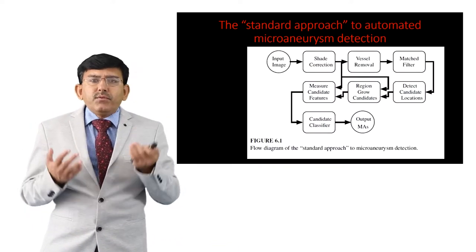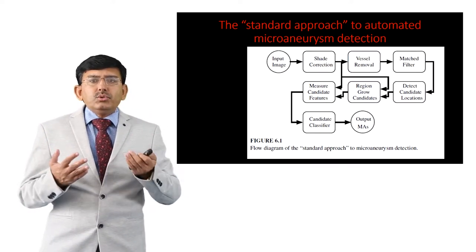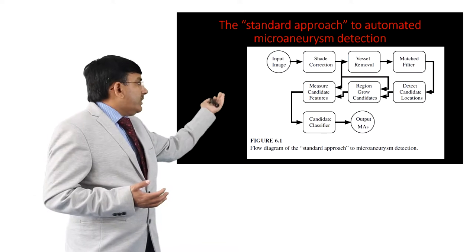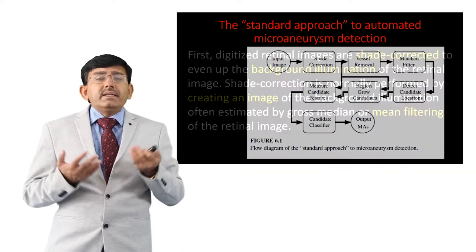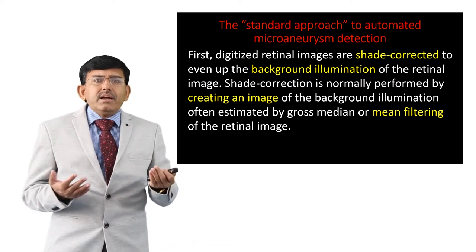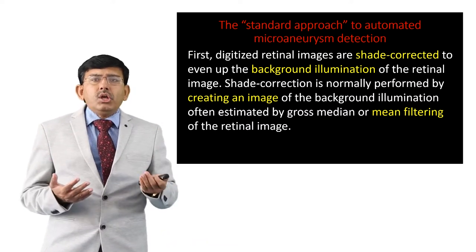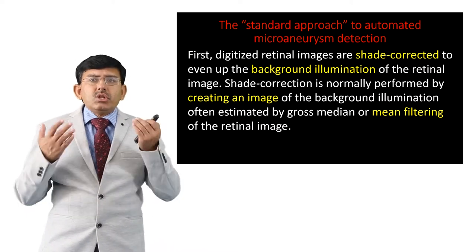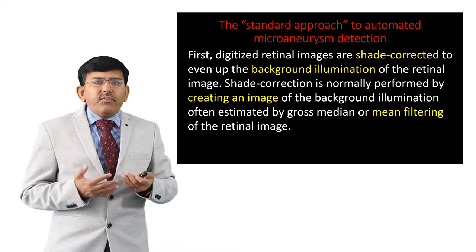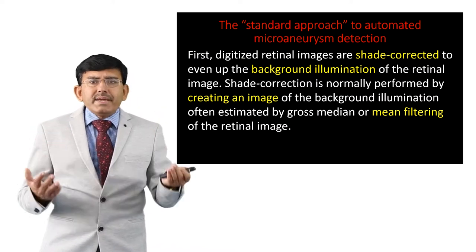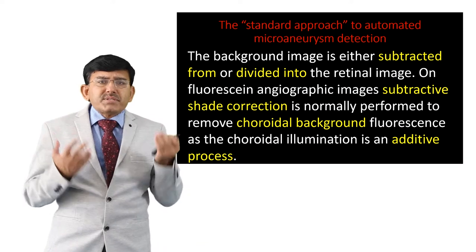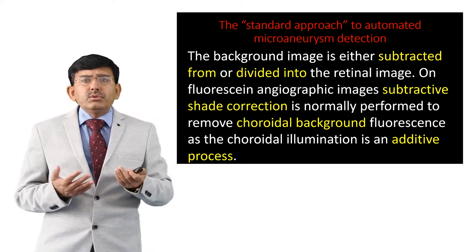This figure shows the flow diagram of the standard approach to detection of microaneurisms. It has various sets of features, and by following those features it is possible to identify microaneurisms easily. First, digitized retinal images are shade-corrected to even up the background illumination of the retinal image. Shade correction is normally performed by creating an image of the background illumination, often estimated by gross median or mean filtering of the retinal image, and the background image is either subtracted from or divided into the retinal image.